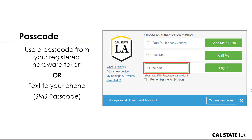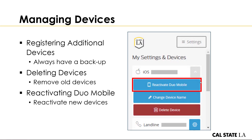If the code you entered doesn't work because you've already used it, and you're using text to phone, it hints at which code to use next. If you got a new phone, make sure the first thing you do — before you try to authenticate or log in — is add your new phone to Duo.